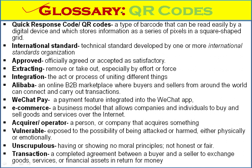The glossary of the QR codes chapter includes: Quick Response Code — what we call a QR code — is a type of barcode that can be read easily by a digital device and which stores information as a series of pixels in a square-shaped grid. International Standard: one of the technical standards developed by one or more international standard organizations. Approved: agreed or accepted.